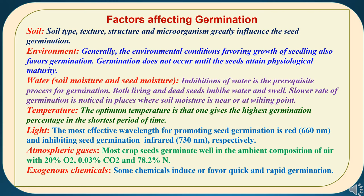The sixth factor is atmospheric gases. Most crop seeds germinate well in the ambient composition of air, having 20 percent oxygen, 0.03 percent carbon dioxide, and 78.2 percent nitrogen. So atmospheric gases also play an important role in germination.